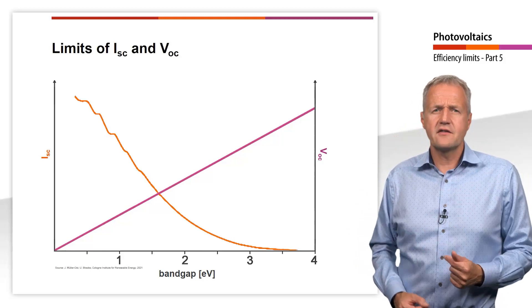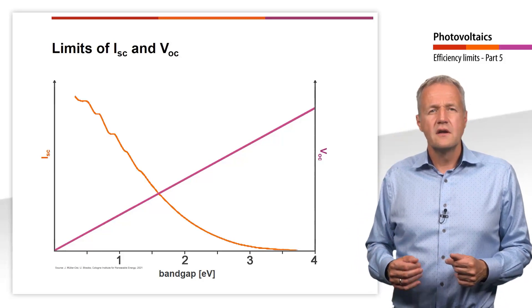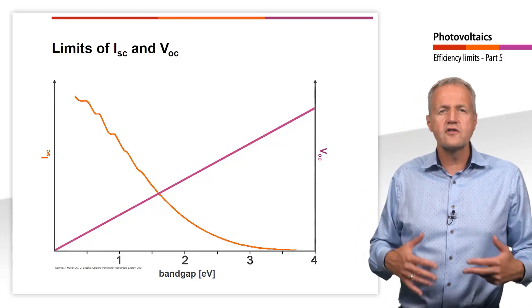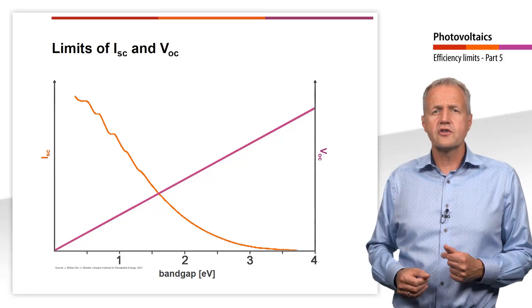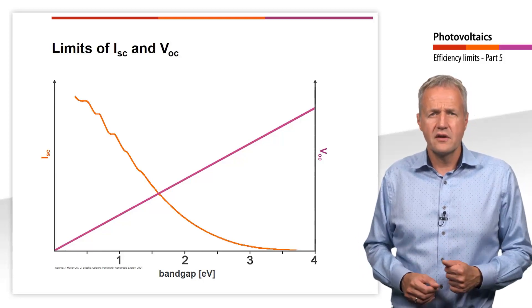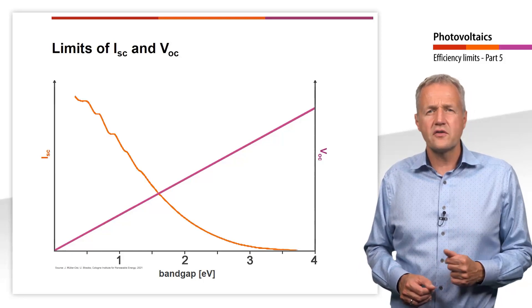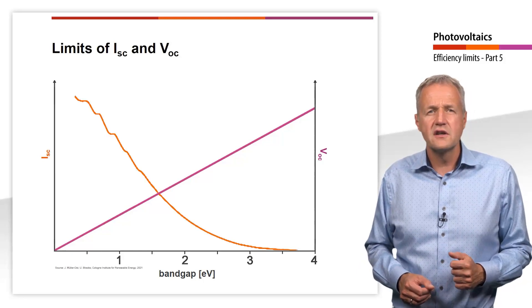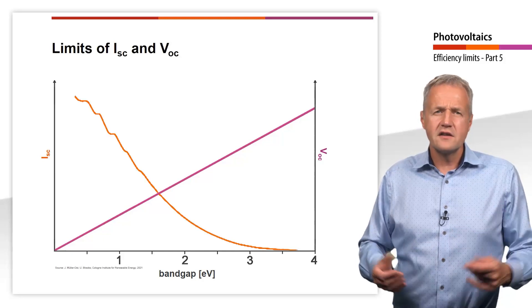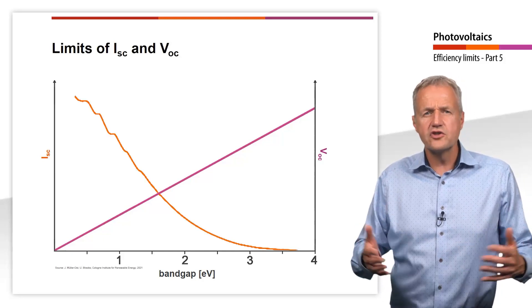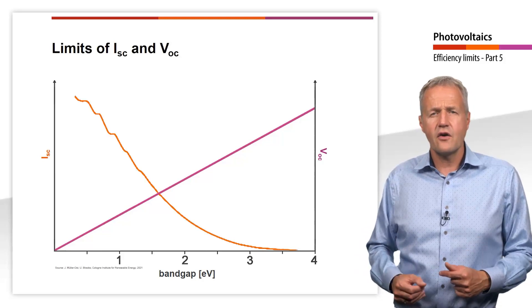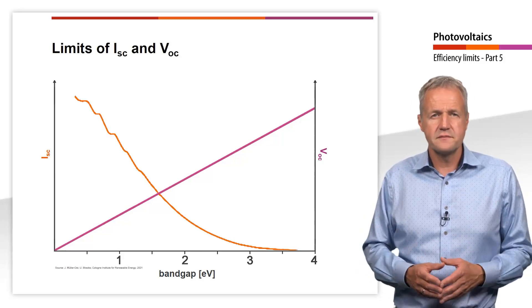Let's try to find this optimum. In order to do that, we need to take a closer look at how the short-circuit current relates to the band gap. In contrast to the open-circuit voltage, the dependency is not linear. Rather, it is related to the distribution of photon energies in the sunlight, or in other words, the light spectrum.